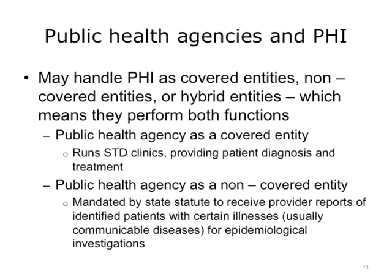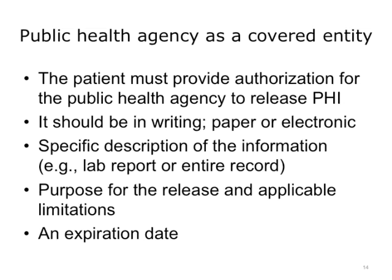There are three categories under HIPAA that a public health agency could fall into: they could be a covered entity, a non-covered entity, or a hybrid entity, which performs both covered functions and non-covered functions. An example of a public health agency that functions as a covered entity is one that runs STD clinics that provide diagnosis and treatment to patients. An example of a public health agency that handles PHI but is not covered by HIPAA is one that is mandated by state statute to receive PHI from providers covered by HIPAA in order to conduct an epidemiological investigation. If the public health agency is a covered entity, it must follow all of the provisions of HIPAA that apply to covered entities.